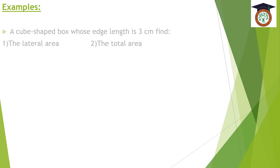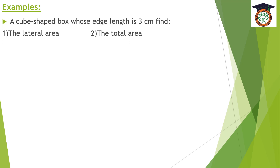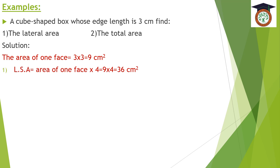The question says: a cube-shaped box whose edge length is 3 centimeters. Find the lateral area and the total area. For the solution, first we get the area of one face, which is side length times side length, equals 3 times 3, equals 9 centimeters squared. Then the lateral surface area equals area of one face times 4, equals 9 times 4, equals 36 centimeters squared.